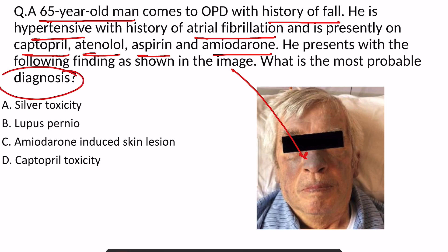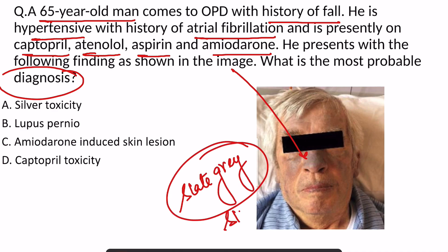The patient is taking so many drugs, and there are many drugs which can lead to hyperpigmentation of the skin. This pigmentation is very classical — it is slate gray pigmentation of the skin, which is characteristically seen on prolonged use of amiodarone.